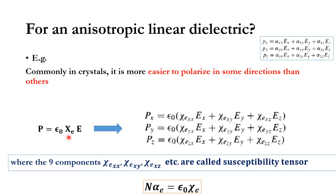But in an anisotropic medium, different directions will be polarized differently. So Px = ε₀(χₑ_xx·Ex + χₑ_xy·Ey + χₑ_xz·Ez), and similarly for Py and Pz. This requires a polarizability tensor to describe the polarization, rather than a single scalar susceptibility.